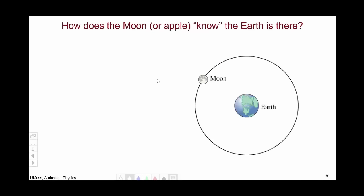So, let's stop and think for a second. How does the Moon, or if you prefer, the apple, know that the Earth is there? I mean, the Moon is very far away from the Earth. It's not touching the Earth. How does the Moon know that the Earth is there? Well, Isaac Newton himself could not come up with a particularly good answer to this question. He called it action at a distance and sort of left it at that.